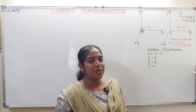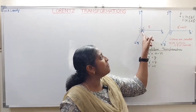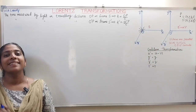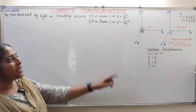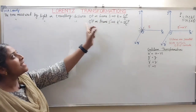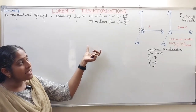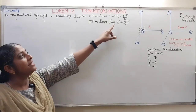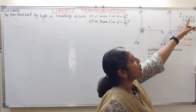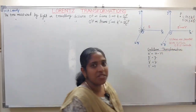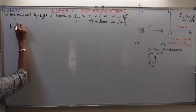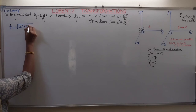The distance measured by the observer in S frame will be OP. The distance measured by the observer in S' frame will be O'P. The time taken by the light signal to travel OP in S frame is t equal to OP divided by c, whereas the time taken in S' frame is t' equal to O'P divided by c. OP can be found using coordinates x, y, z and O'P by coordinates x', y', z'.